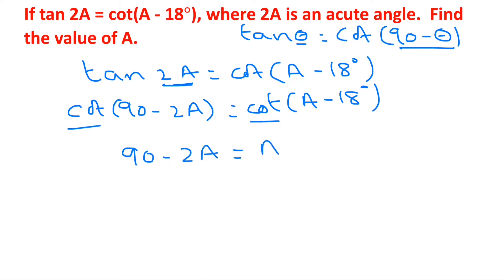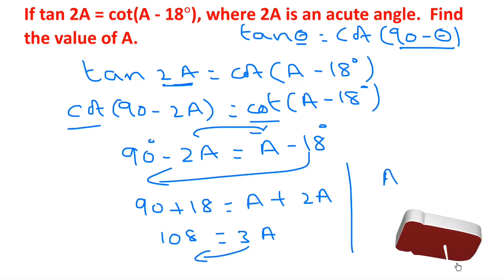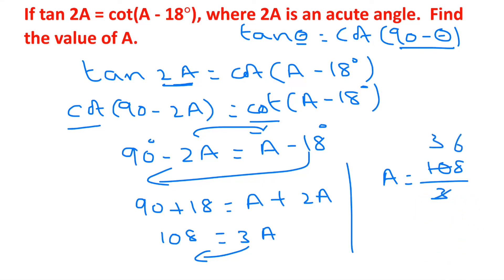Transposing: 90° + 18° = a + 2a, so 108° = 3a. Dividing both sides by 3, a equals 36°.